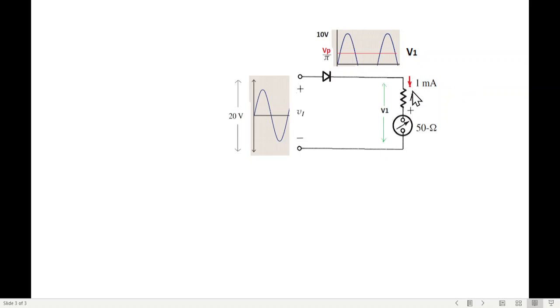Input voltage current, this resistance R, this resistance 50 ohm. So from this, Vp over pi, V1. Now, remember,